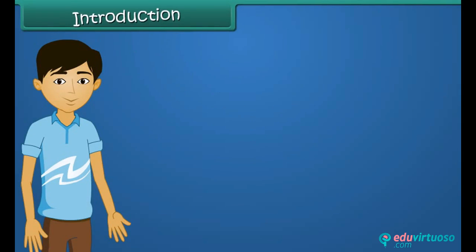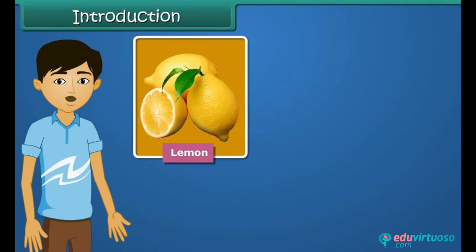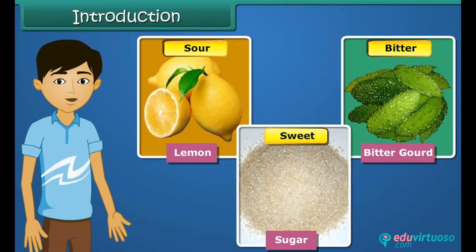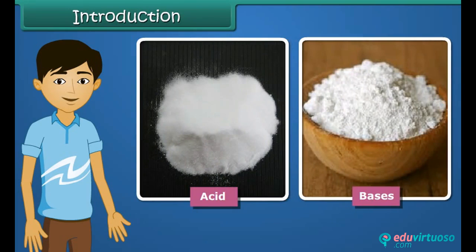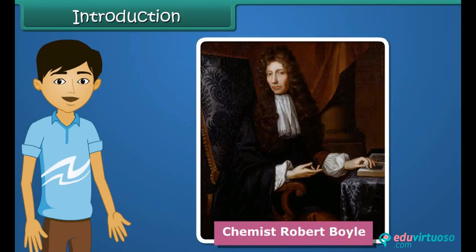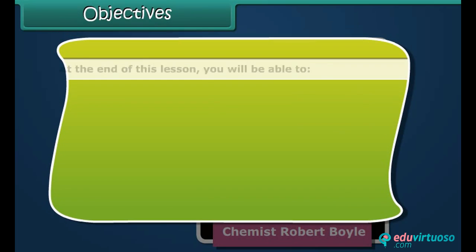Hello students, we have lemon, bitter gourd, and sugar. Some of these foods taste sour, some taste bitter, some taste sweet, and some are salty. The sour, bitter, sweet, and salty taste of foods arises due to the presence of acids, bases, and salts in them. In the 17th century, chemist Robert Boyle first labeled substances as acids and bases.